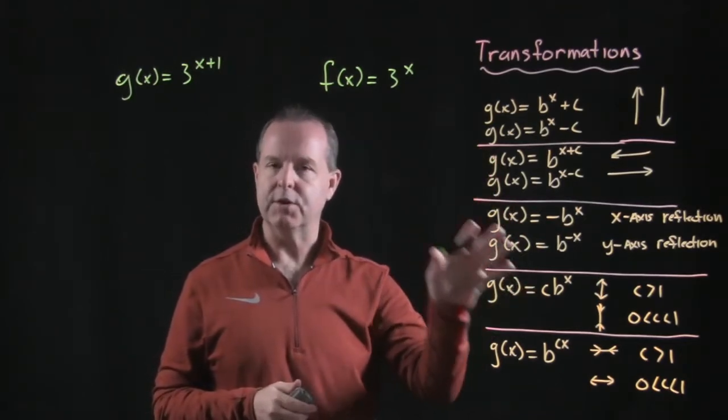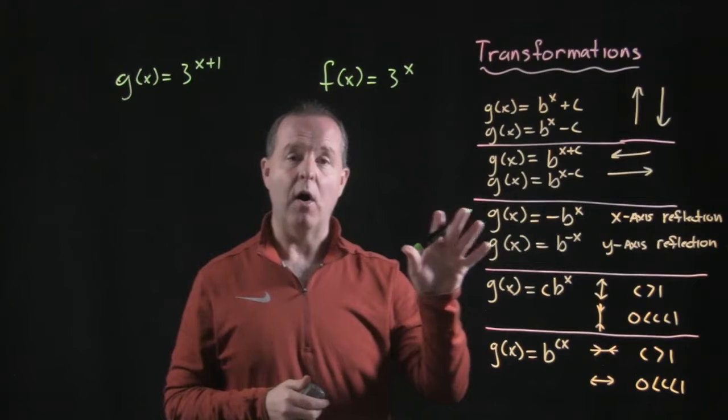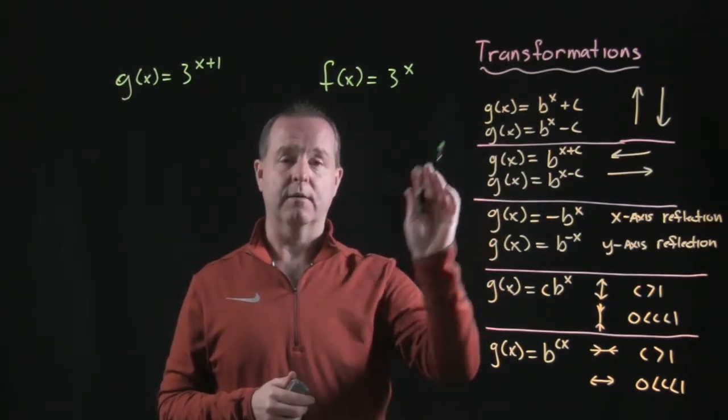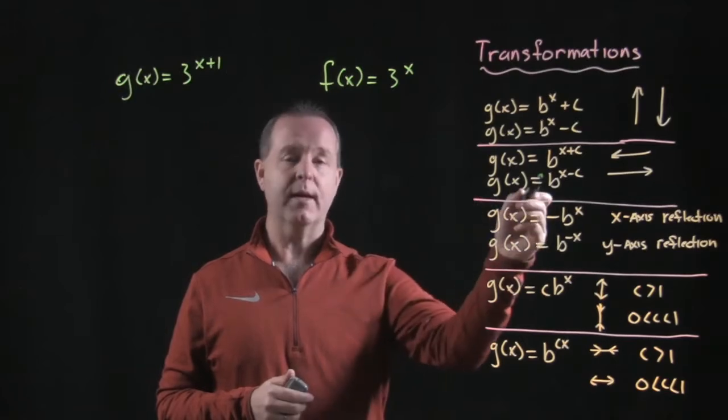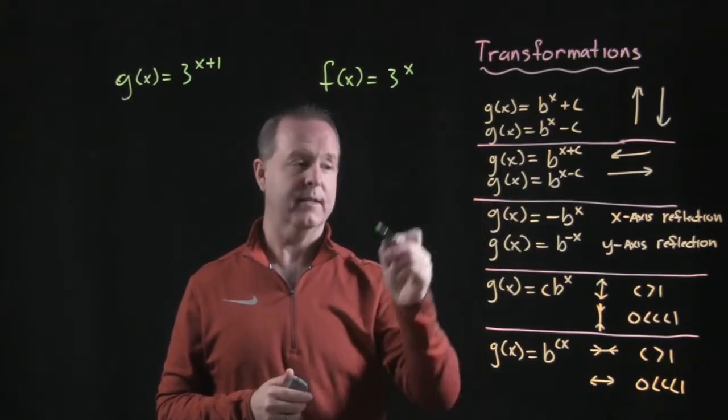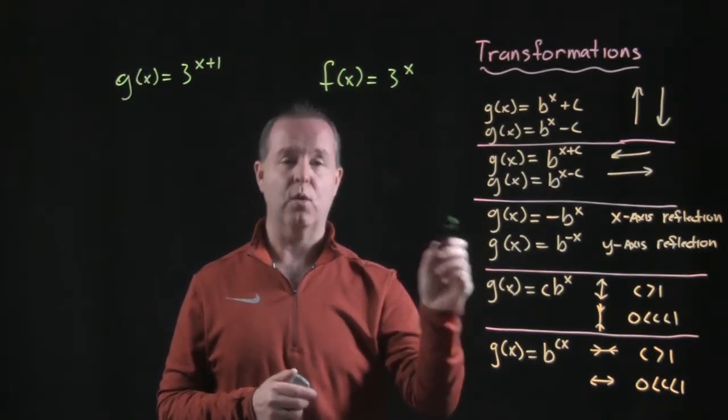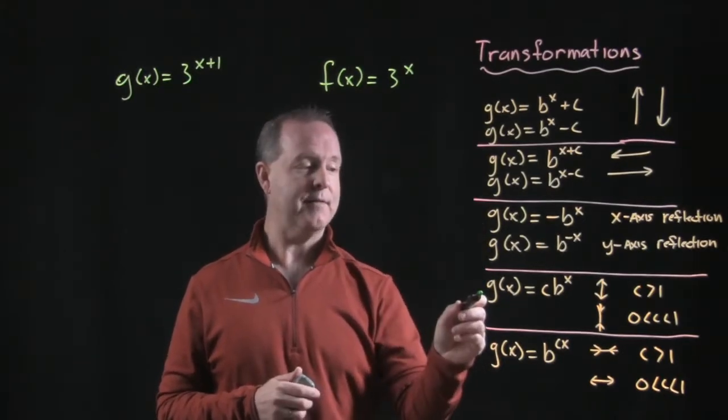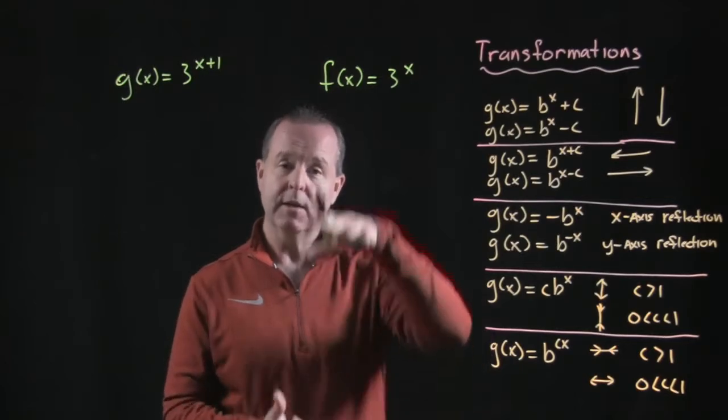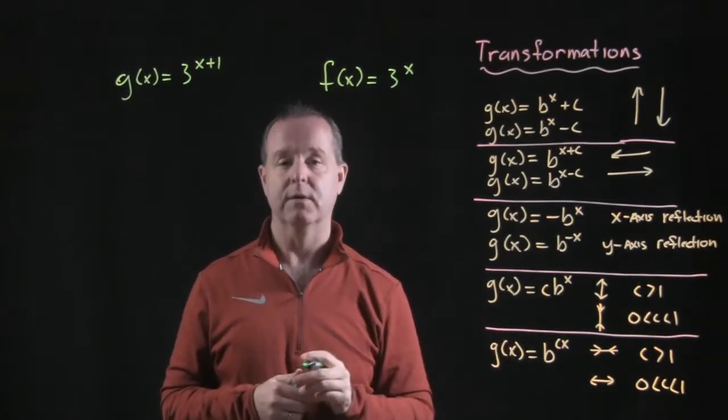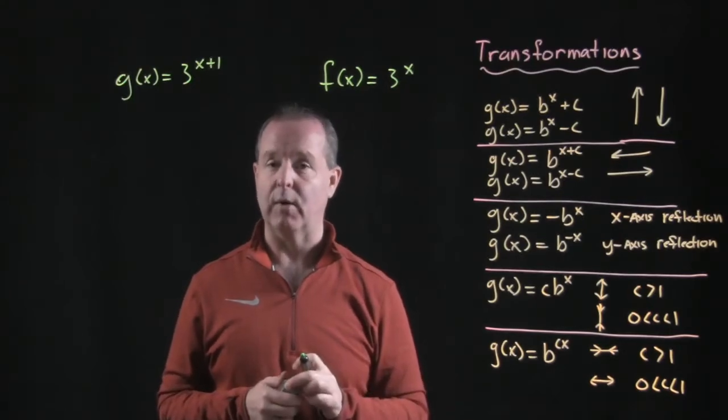So there's a whole listing that you can also find elsewhere of all the different types of transformations. We can vertically shift our functions up and down. We can horizontally shift our graphs left to right. We could reflect our graphs about the x-axis or the y-axis. We also have some horizontal stretching or shrinking with our graphs and we also have some vertical shrinking or stretching of our graphs as well.